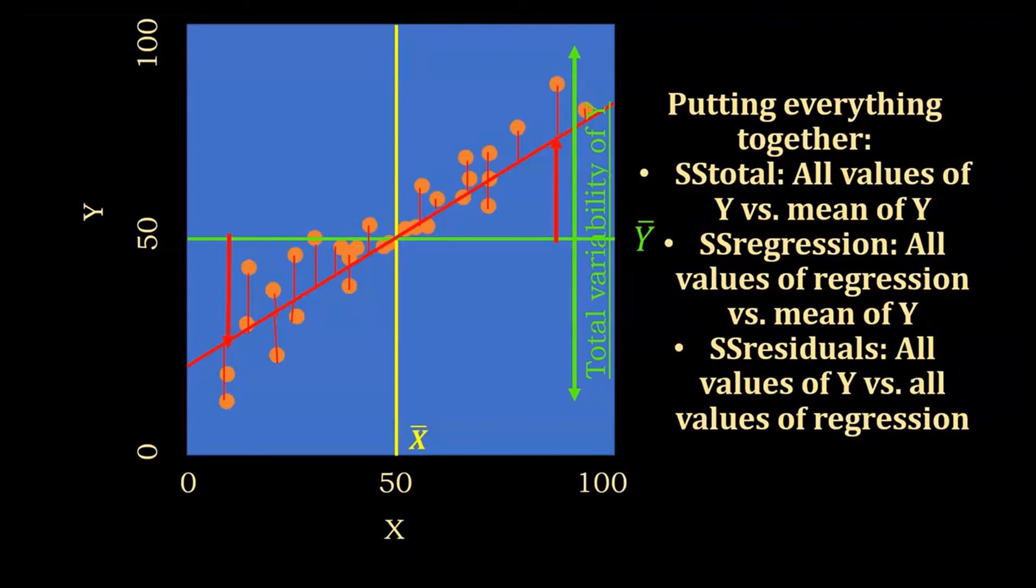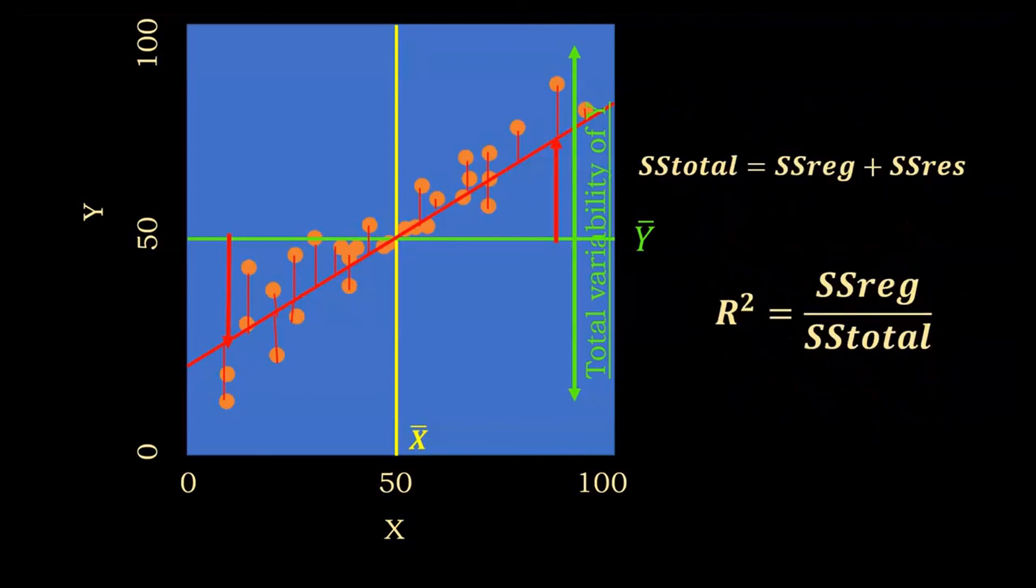So in this case, we can calculate the sum of squares total, which is the total variability of Y, as an equation that is the sum of the sum of squares of the regression plus the sum of squares residual.